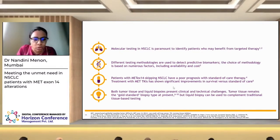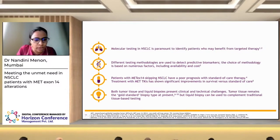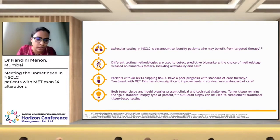MET exon 14 skipping mutations are associated with poor outcomes. Both tumor tissue and liquid biopsy are used for detecting MET exon 14 skip mutations and other MET amplifications in non-small cell lung cancer. Tumor tissue remains the gold standard, but liquid biopsy may be used when tumor tissue cannot be obtained.